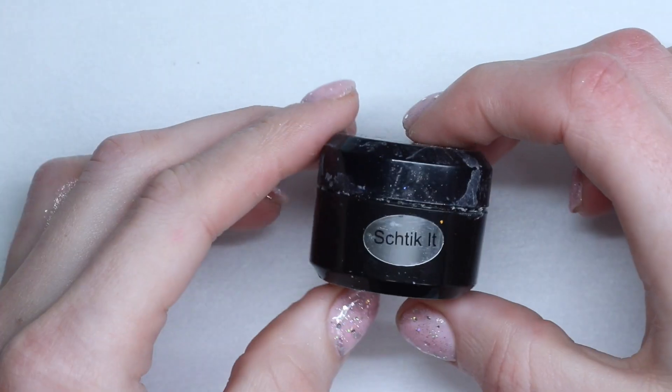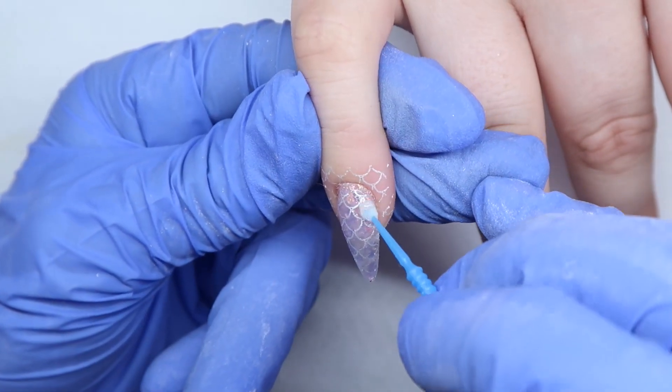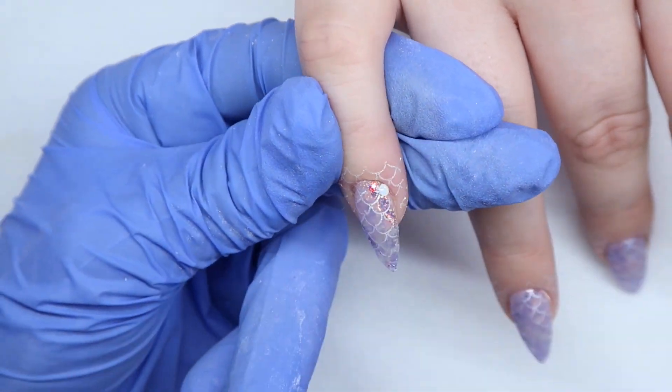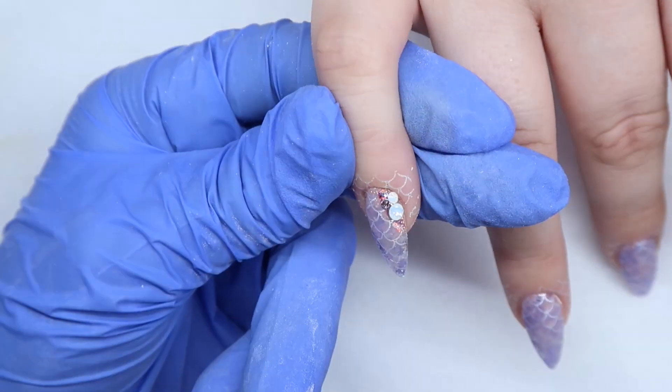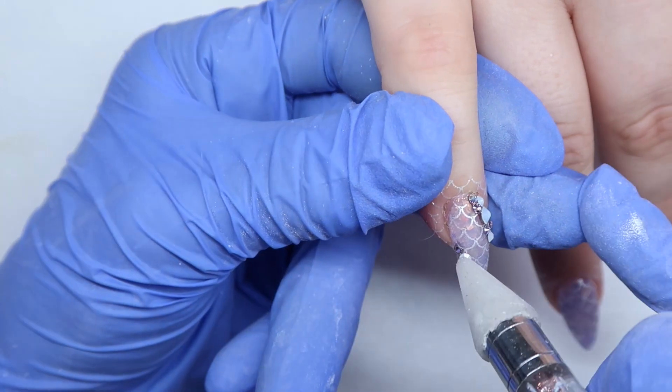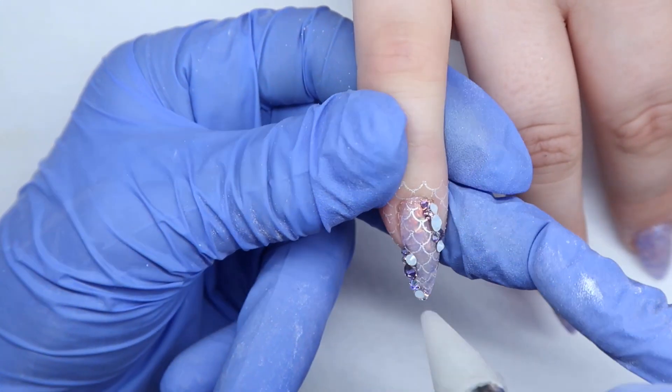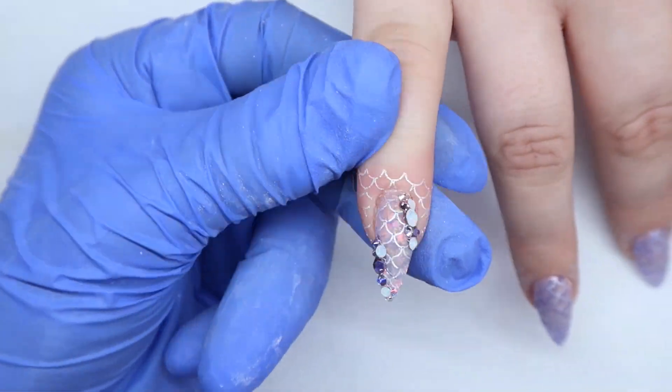So for crystals I'm using Ugly Duckling Shtick It to glue the crystals down. I always use this now. I find it very good and clients don't really lose any crystals at all now. The crystals I'm coming in with are from Crystal Princess. I always use their crystals. So you're going to have to cure the Ugly Duckling Shtick It.